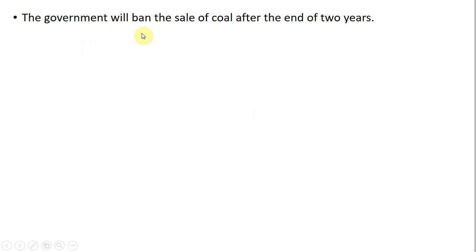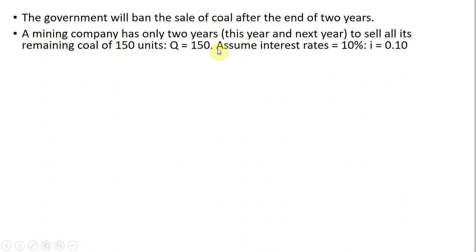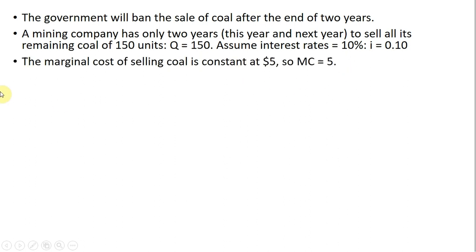We're going to look at the economics of exhaustible resources. Let's say the government will ban the sale of coal after two years. A mining company has only two years to sell all of its remaining stock of 150 units, so Q equals 150. We'll assume interest rates are 10%, so I equals 0.1, and the marginal cost of selling coal is constant at $5 this year and next year.